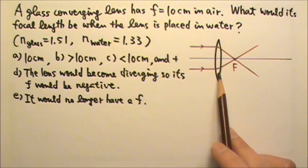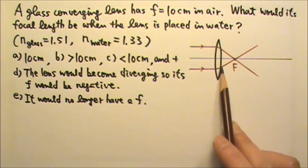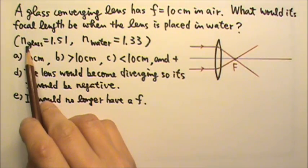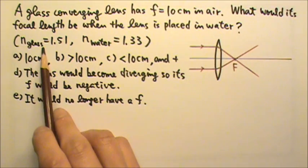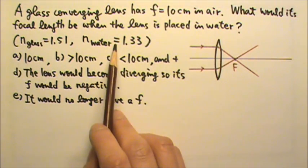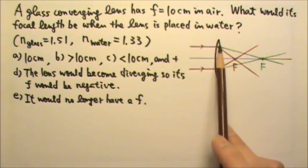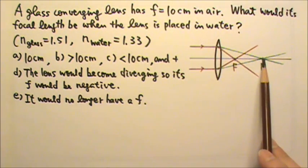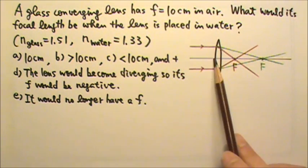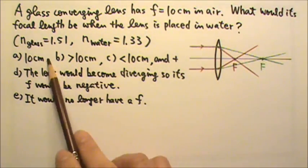When the lens is in water, light rays would go from water to glass and then to water. With each refraction, there is speed change. But because the indices of refraction of glass and water are closer than those for glass and air, there is less speed change and therefore less bending for each refraction. Light rays bend less means they would meet farther down their path. So the focal length is more than the 10 cm when the lens is in water. The answer is B.